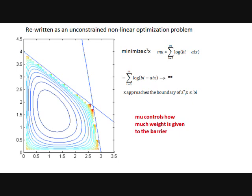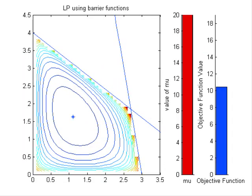We use the value of mu to control how much weight is given to the barrier. A large value of mu means we stay as far away as possible from the boundaries. Solving this NLP with a large value of mu gives us the analytic center of the feasible region, shown here as a star.